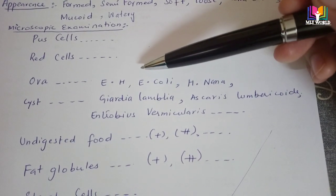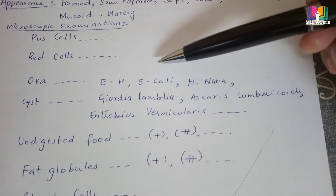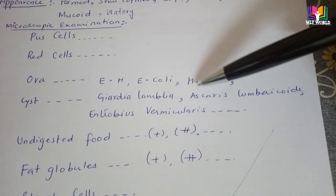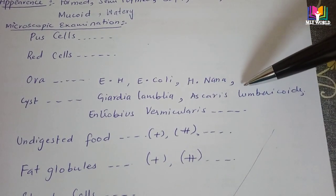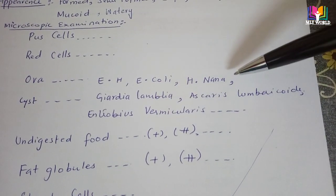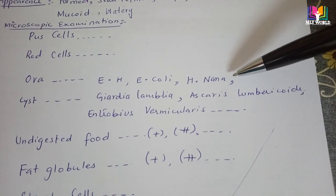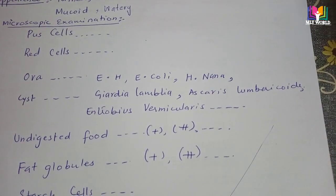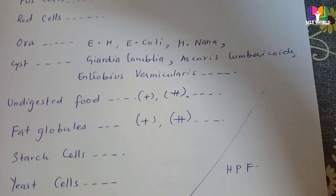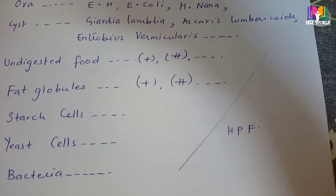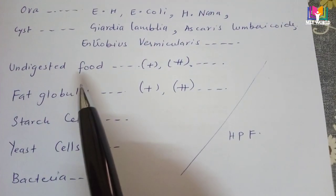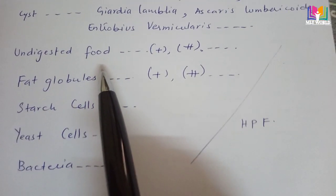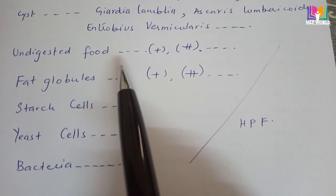Then we have to mention parasites, which is the most important part of stool examination diagnosis. If you observe any parasite cyst or trophozoite — trophozoite meaning the active form — the most common parasites are Entamoeba histolytica, Entamoeba coli, H. nana, Giardia, Ascaris lumbricoides, Enterobius vermicularis, Strongyloides stercoralis, and Blastocystis hominis, among others. If no parasites are found, you write 'ova/cyst not found' or 'not seen'.